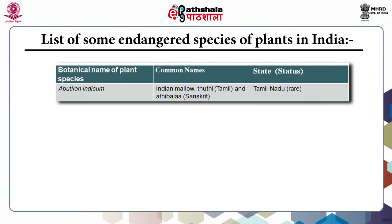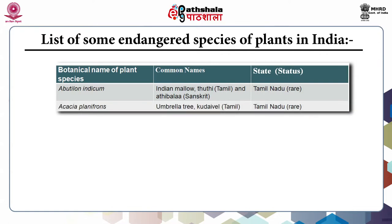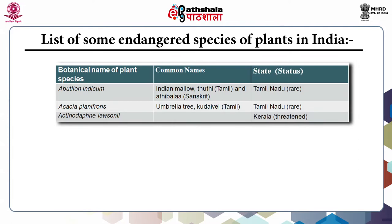Abutilon indicum, also called Indian mallow or Tuthi in Tamil, is found in the state of Tamil Nadu and its status is rare. Acacia planifrons, also called umbrella tree, is also found in Tamil Nadu and its status is also rare. Actinodaphne lasuni is found in Kerala state and its status is threatened.